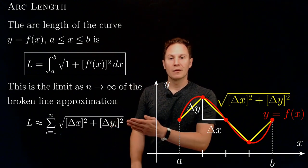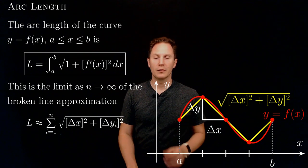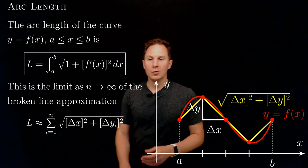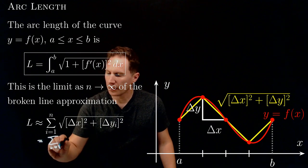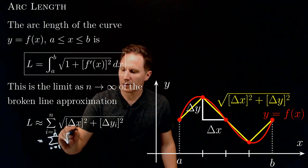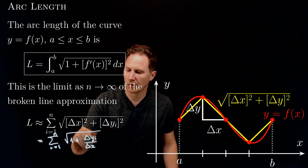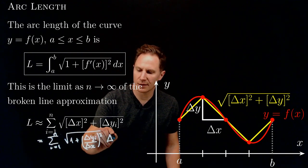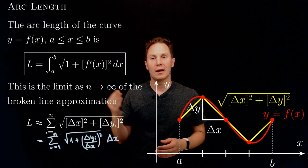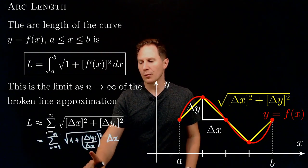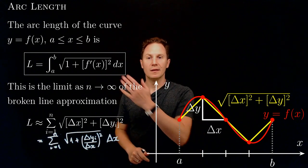The hypotenuse can be computed using Pythagoras as the square root of delta x squared plus delta y squared. We add up these hypotenuse lengths to get the broken line approximation, then factor out delta x from under the square root to obtain 1 plus (delta y / delta x) squared under the root, times delta x. As delta x goes to 0, the difference quotient tends to the derivative, giving us the integral formula.